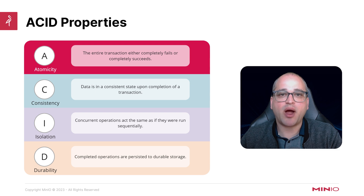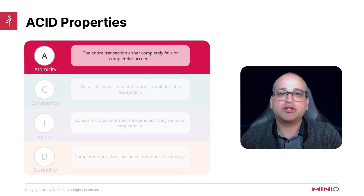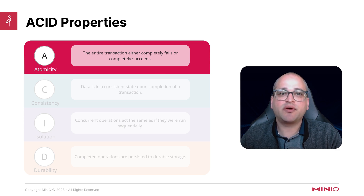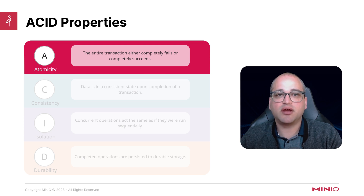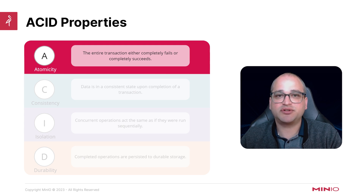Let's do a quick review of the properties that make up the ACID acronym, starting at the top. First, we have atomicity. Atomicity is usually talked about with reference to the concept of transactions. You can think of transactions simply as multiple units of work that are being combined together. The important thing is that a transaction is atomic, meaning it's all or nothing — either the entire transaction goes in together at a single point in time, or it doesn't go in at all.